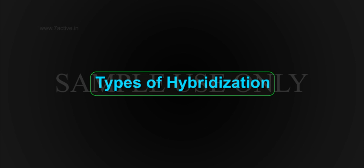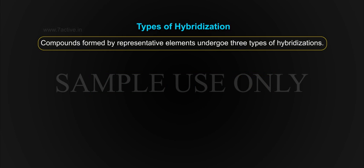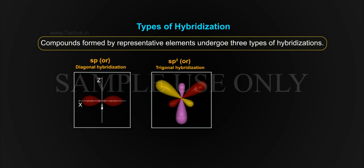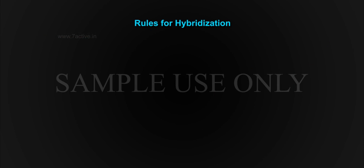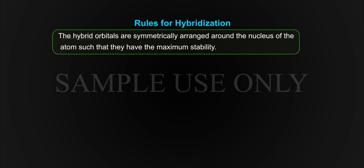Types of Hybridization: Compounds formed by representative elements undergo three types of hybridizations: 1. SP or Diagonal Hybridization, 2. SP2 or Trigonal Hybridization, 3. SP3 or Tetrahedral Hybridization. Rules for Hybridization: The hybrid orbitals are symmetrically arranged around the nucleus of the atom such that they have maximum stability.